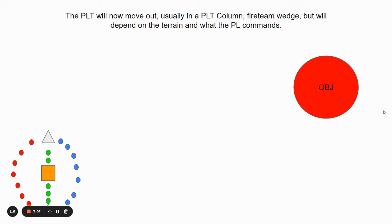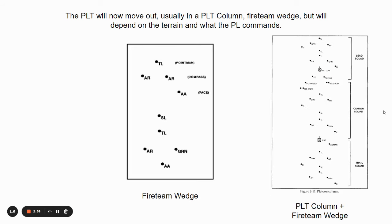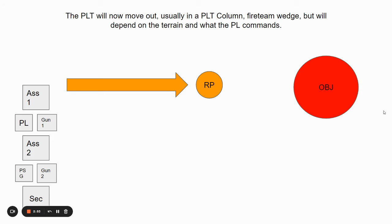The platoon will now move out usually in a platoon column fire team wedge, but it'll depend on the terrain and what the PL commands. This is what a fire team wedge looks like, and this is what a platoon column fire team wedge looks like. They're going to go to the RP.